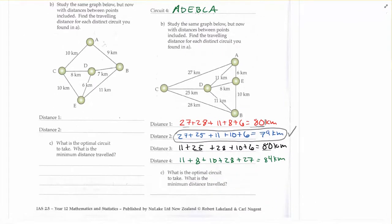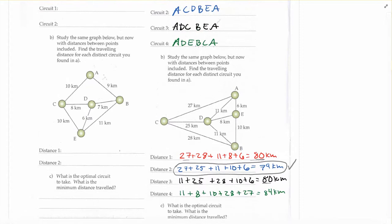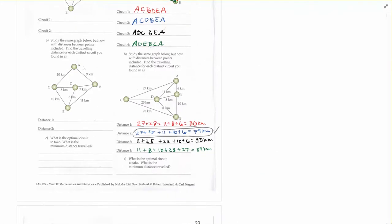But you would write your optimal circuit for the minimum distance traveled would be what you got for the red diagram, which was A, C, B, D, E, A. Oops, sorry, not red, blue. My fault. And the blue one was A, C, D, B, E, A, at a distance of 79 kilometers.